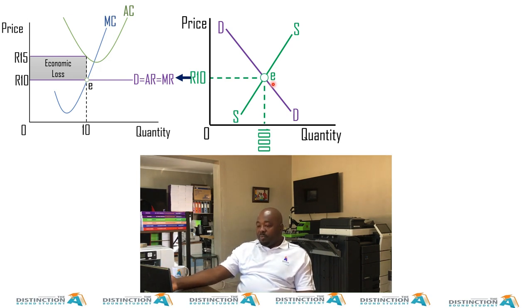How can this be transferred to an individual producer? If we have an individual, let us assume that this is what's happening in the short run. The individual is taking this price of 10 from the industry. As you can see, he is selling the product for 10 rand as well.